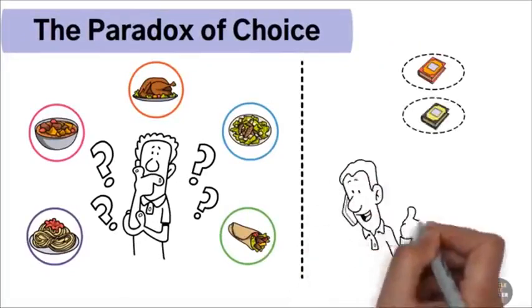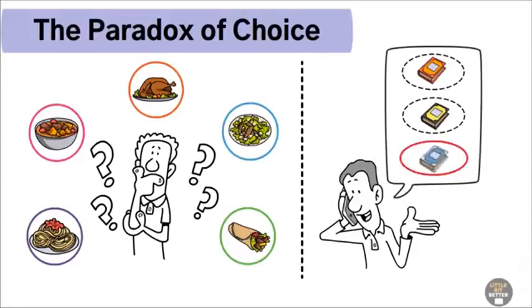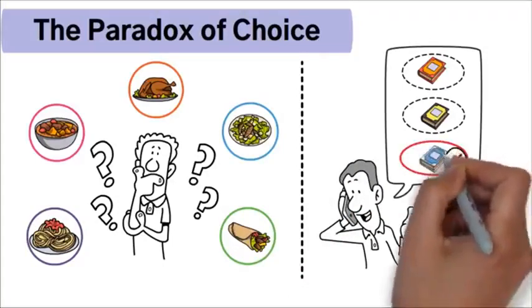For example, if you're selling three products, mentioning the one that is the best seller can simplify the decision-making process and lead to a sale.